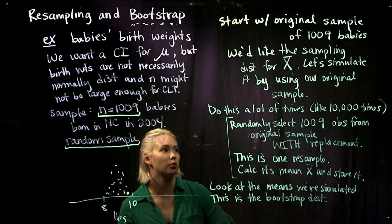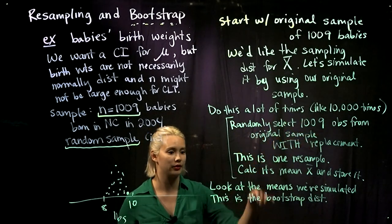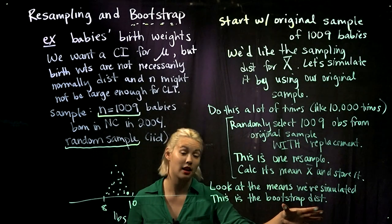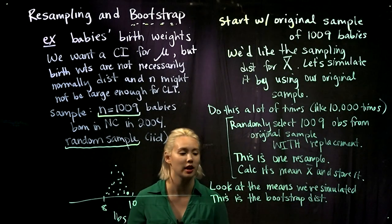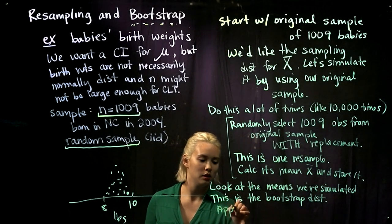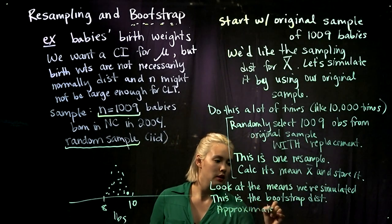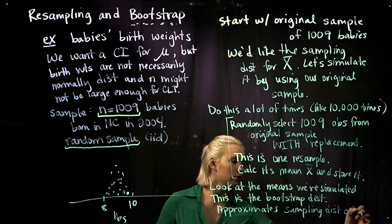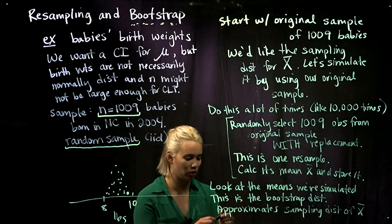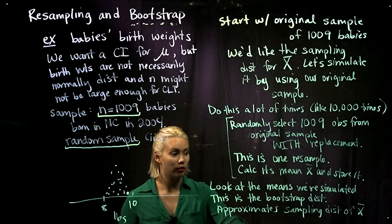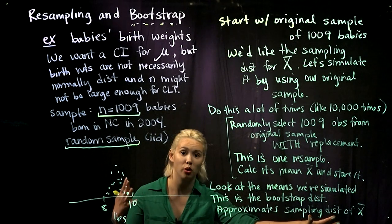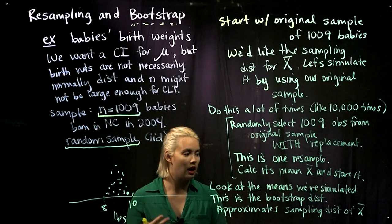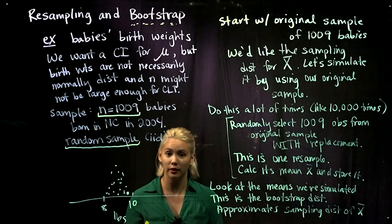We've created our bootstrap distribution by doing this resampling process a huge number of times. Once we have this bootstrap distribution, we know that it is actually approximating the sampling distribution of X-bar. Since we've approximated the sampling distribution of X-bar, we can do whatever we want with it — for example, calculate a confidence interval.